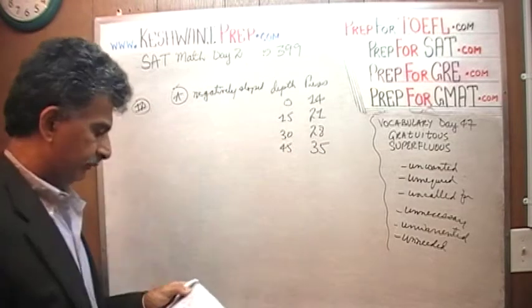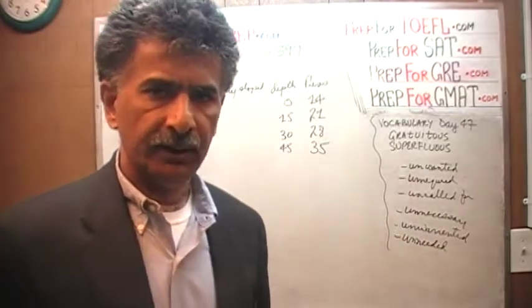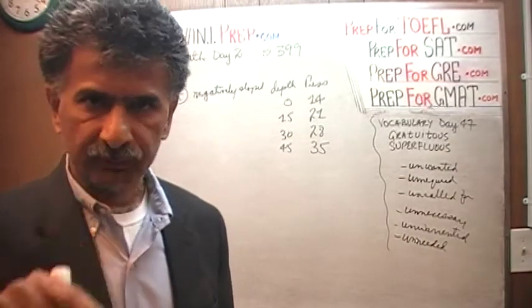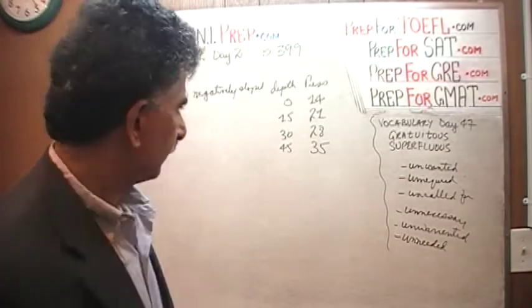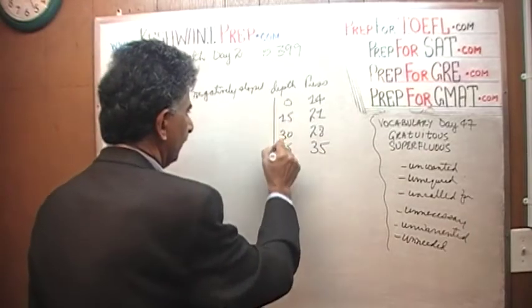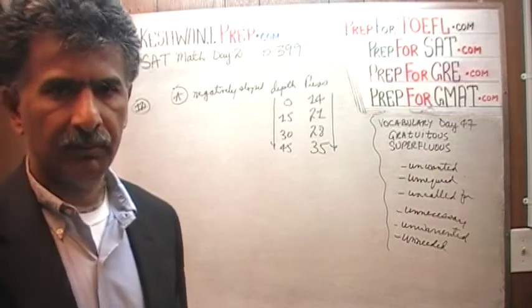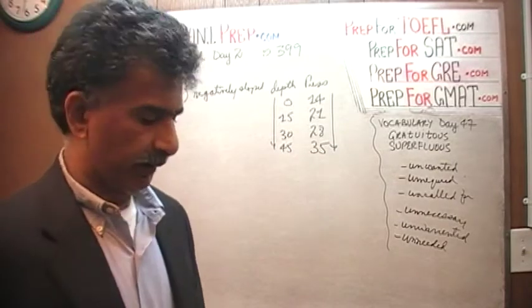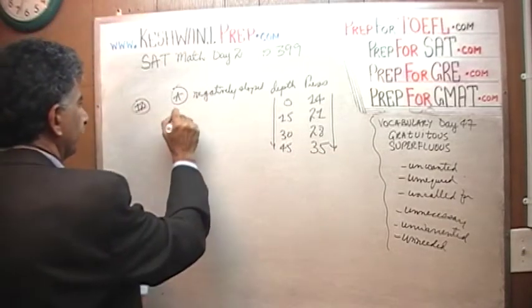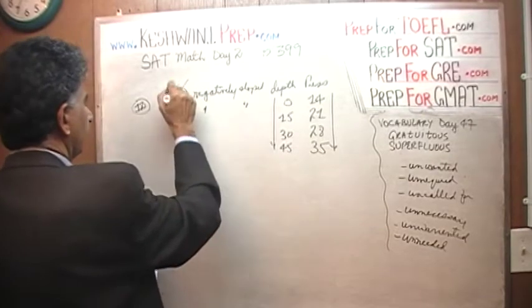The line is negatively sloped. What they're saying there is that as the depth goes up, pressure goes down. No, that's not what we have here. As the depth goes up, so does the pressure. They're moving in the same direction. A is negatively sloped line, so is B. B is negatively sloped.